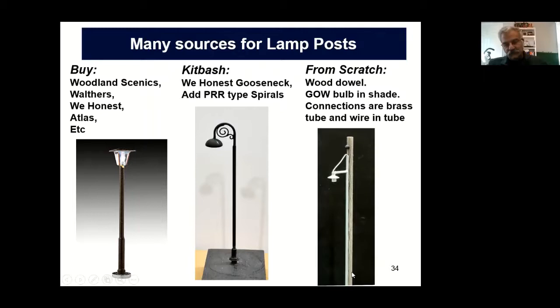And then you can make lamp posts from scratch. This is a wood dowel suitably distressed with a razor saw. That's a grain of wheat bulb in the shade. The whole thing is soldered together with silver solder — otherwise it can break easily. One of the connections goes from the lamp directly to the brass structure; the other is a simulated support that goes up and through the tube. It works rather well.